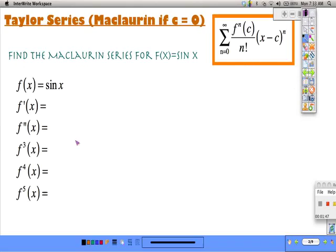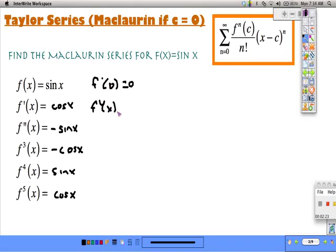So let's write a Maclaurin series for sine of x. We have to evaluate each of these at 0. The function at 0 is 0, the first derivative at 0 is 1, and so on.